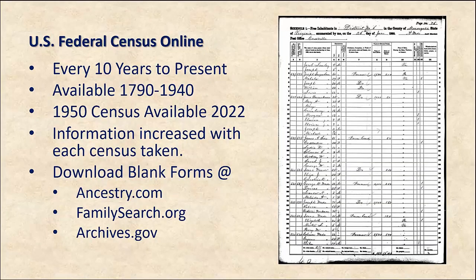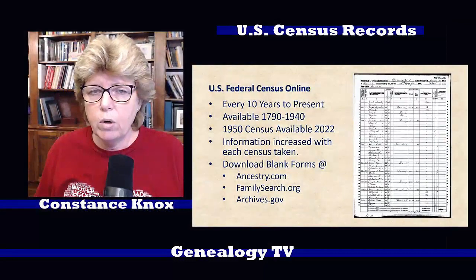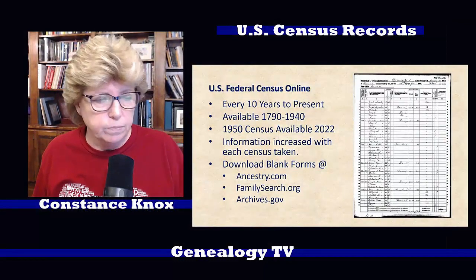The U.S. federal census was done every 10 years. It's available from 1790 to 1940. The 1950 census will be available in 2022. With each census record, with each enumeration, more and more information became available.